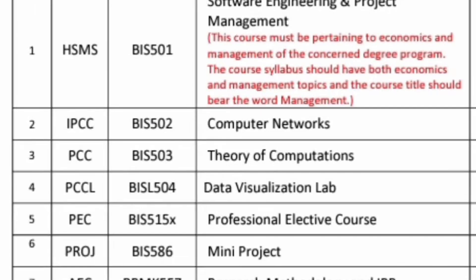In the fifth semester, the subjects are almost similar to CSE. CSE also has the same subjects: software engineering and project management, computer networks, theory of computation, data visualization, a professional elective course, a project, environmental studies, and one of NSS, physical education, or yoga. You can see that at least 70 to 80% of subjects are common between CSE and Information Science Engineering.